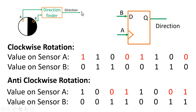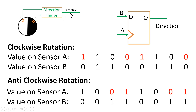Now let us verify the same circuit for anticlockwise rotation. The output of sensor A is the clock signal, so at the positive edge of the clock, the value on sensor B is 1. So the input of the flip-flop becomes 1, and at the positive edge, the output Q becomes high. This is exactly what is expected from the direction finder — the output should be high for anticlockwise rotation. In short, this simple D flip-flop acts as a direction finder.